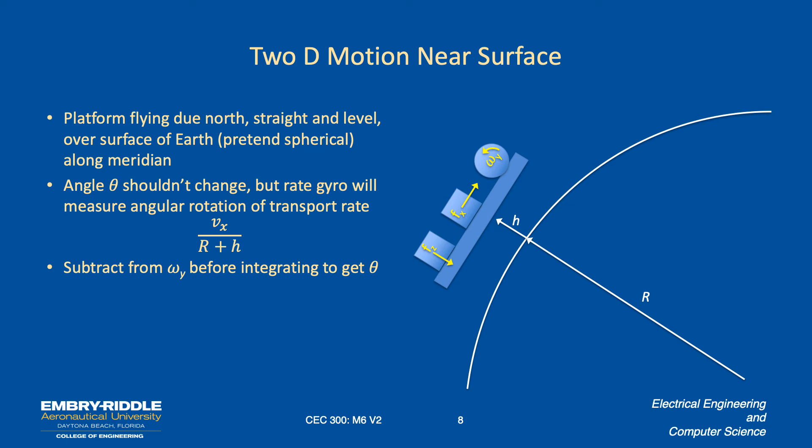So before we integrate our omega Y to get our theta, we need to take that term out. And then there's also going to be these Coriolis terms for the Earth rotating under the platform that we're going to have to take account of.